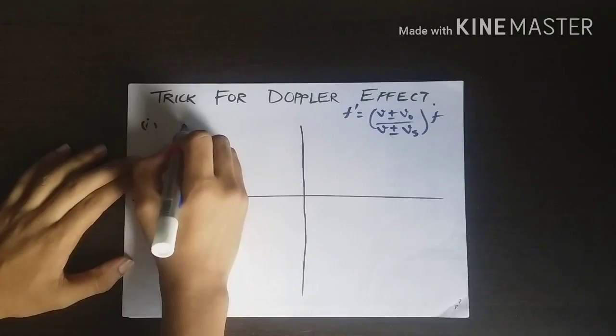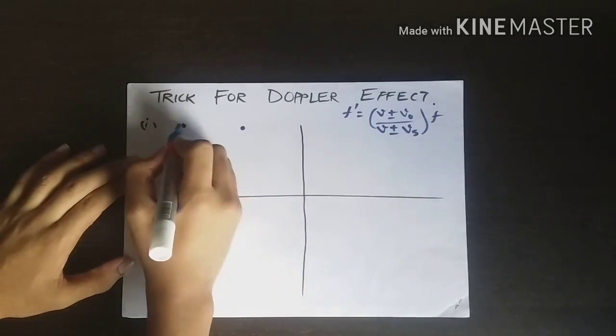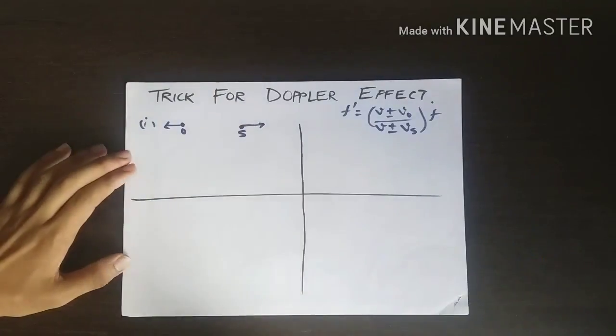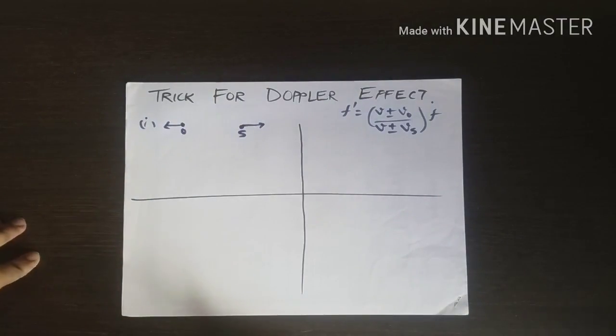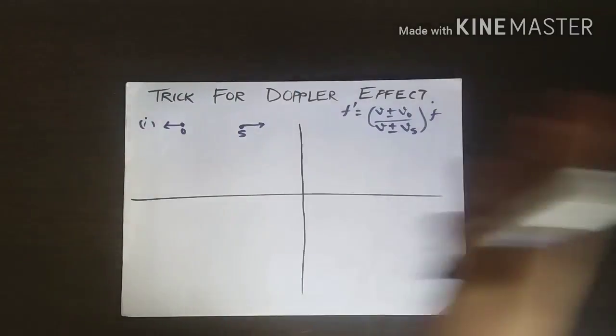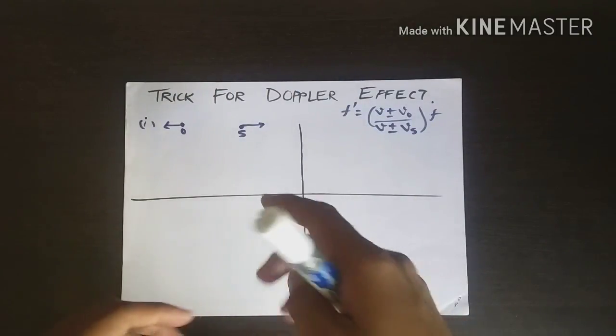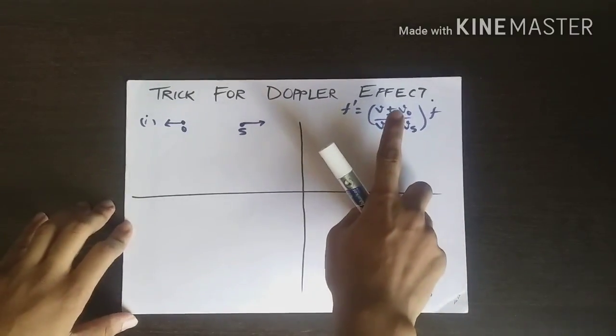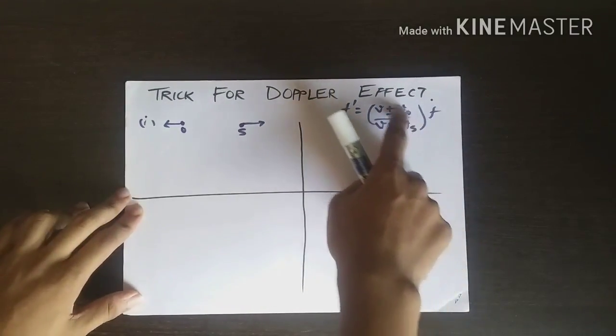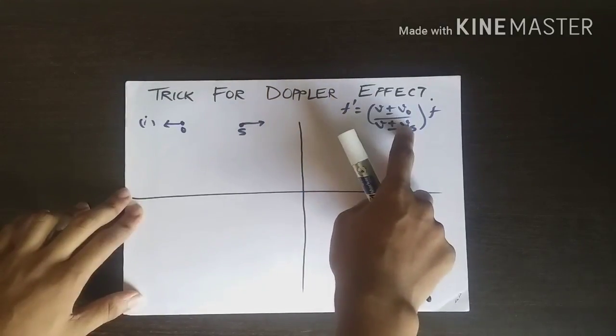In the first case, the observer and source are moving away from each other. In this case, we know the apparent frequency has to be the least because both are moving away. So we make this part in the bracket as least as possible, since F is a constant.